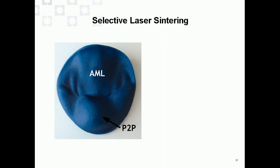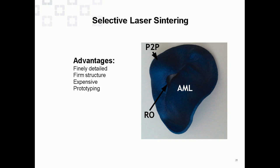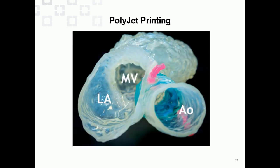Here are two examples of what we've done. One is laser sintering — a hard material that prints fine, delicate detail. Here's a patient with mitral valve prolapse where you can see the prolapsed leaflet. This firm structure, though expensive, is good for prototyping new valves — you could print a rigid new valve and place it into a softer model more representative of the mitral valve annulus.